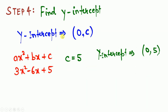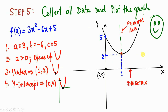Step 4: find the y-intercept by putting x = 0. This gives the value of c = 5, so the y-intercept is at (0, 5).